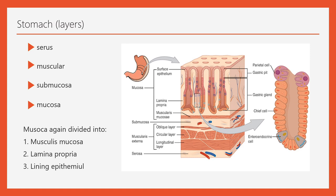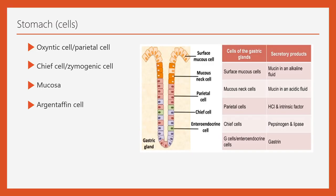The stomach has several glands including the cardiac gland and the pyloric gland. An important point: the parietal cells release the intrinsic factor, known as the intrinsic factor of Cassel. The intrinsic factor of Cassel helps in the absorption of vitamin B12 — please remember this.